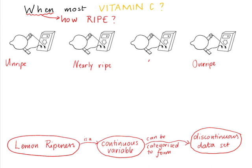The four categories are: unripe, nearly ripe, ripe, and overripe. And so he can't use a line graph because it's discontinuous data — that's why he chose to use a bar graph.